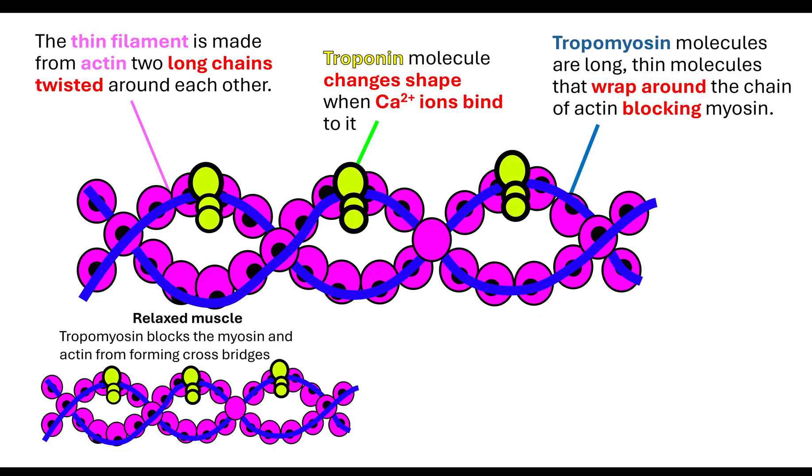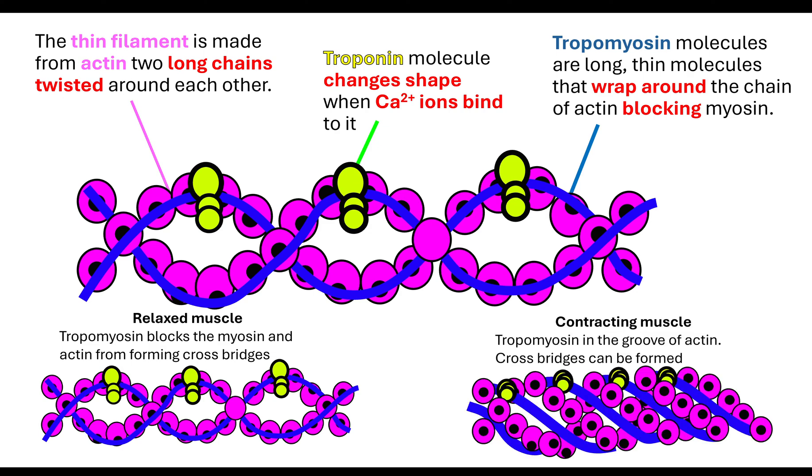It's important that you note that tropomyosin has a very specific role to play in the relaxation of a muscle. It's going to block the myosin from binding to the actin, blocking it from forming cross bridges.